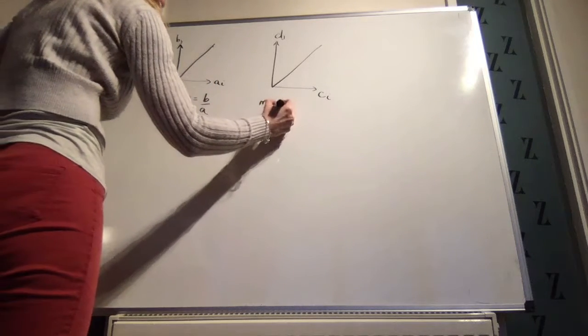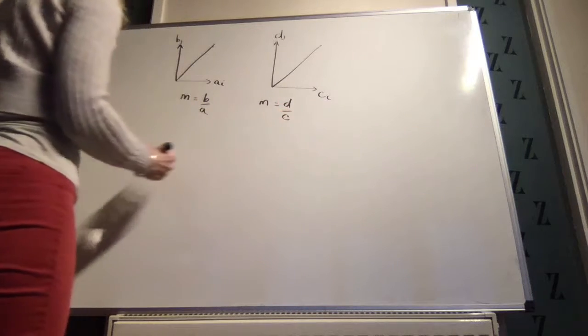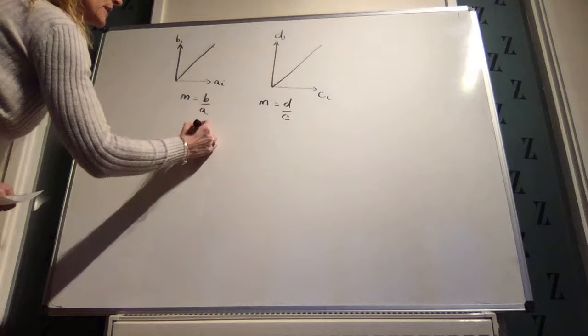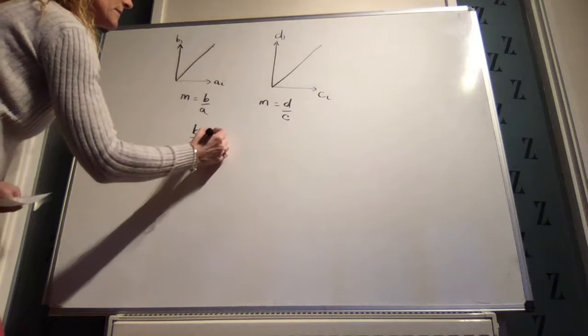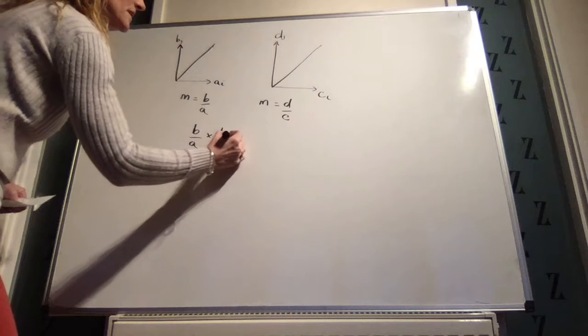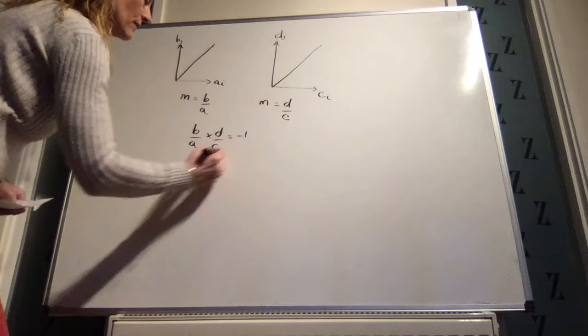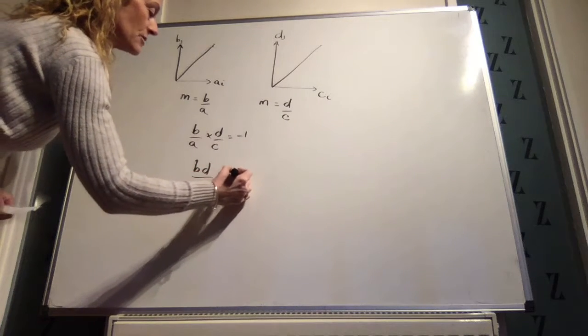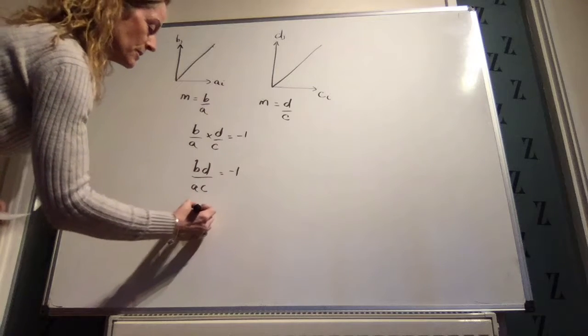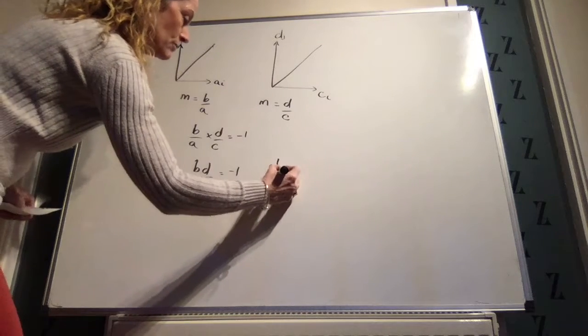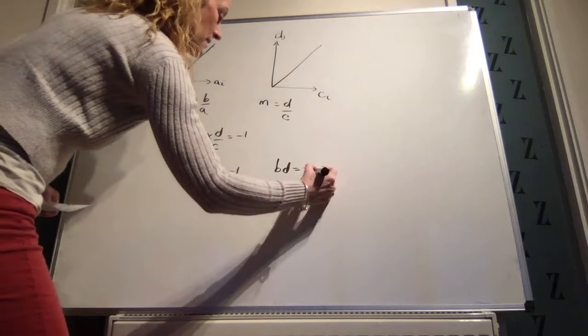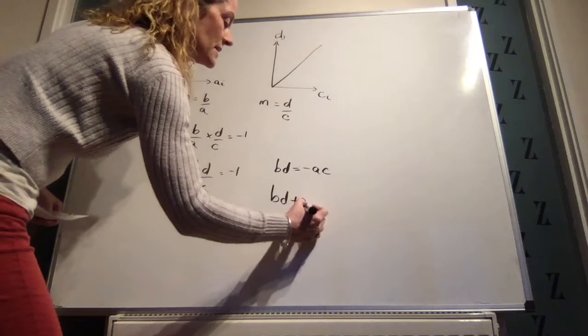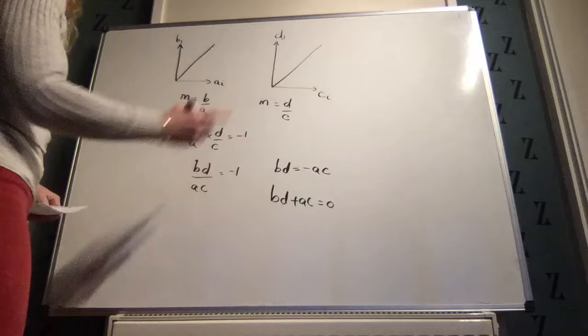So the slope of that line is b over a. The slope of that line is d over c. So what we're saying is if those two lines are perpendicular, then b over a multiplied by d over c is equal to minus 1, giving you bd over ac is equal to minus 1. Multiply across by ac, giving you bd is equal to minus ac, or bd plus ac is equal to 0. That's important.